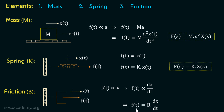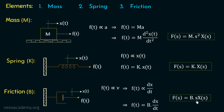Now if we apply the Laplace transform on both sides, we get f of s equal to b multiplied with s x of s, where x of s is the Laplace transform of x of t and f of s is the Laplace transform of f of t. This is the force equation in the case of friction. We are now done with the derivation of force equations for all three elements of translational mechanical systems.